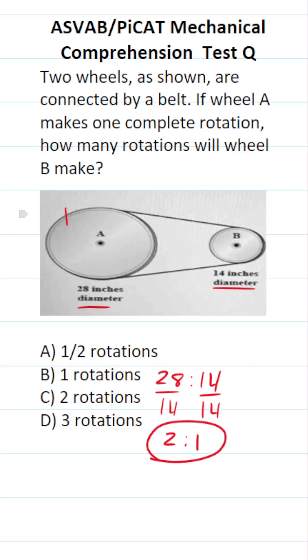That means for every one rotation this big gear makes, this small gear is going to rotate two times. All right, so this one is going to be C, two rotations.